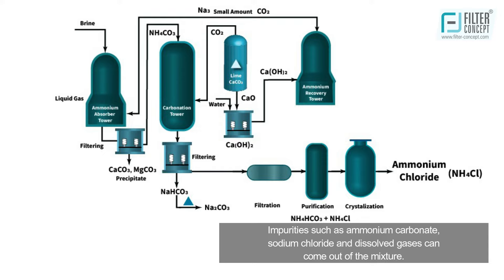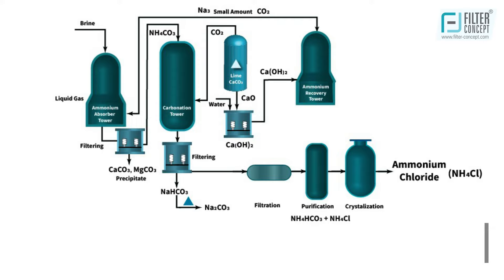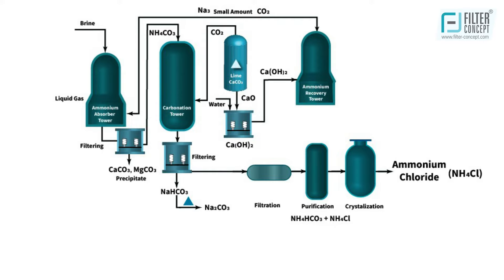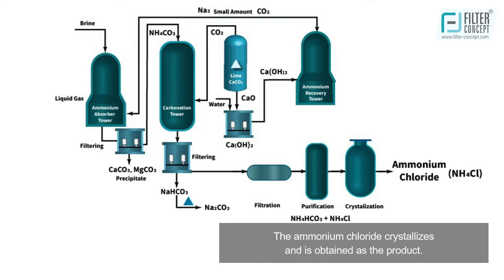Impurities such as ammonium carbonate, sodium chloride, and dissolved gases are removed from the mixture using heating and separation techniques. This pure ammonium chloride solution is then saturated and fed into a crystallizer, where ammonium chloride crystallizes and is obtained as the product.